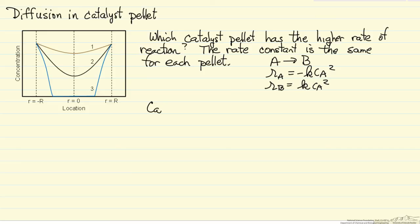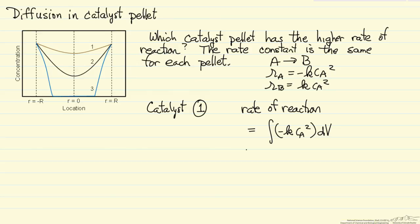the answer is that catalyst pellet 1 has the higher rate of reaction. And it's the same reasoning that the total rate of reaction within the pellet would be an integral, the rate of reaction per volume, integrated over the volume. Of course we could integrate this over radius for the appropriate values to get volume. Again, because the concentration of A in pellet 1 is greater than that in 2, greater than that in 3, then highest concentration means highest rate of reaction.